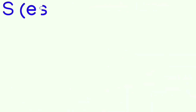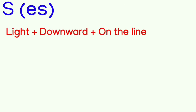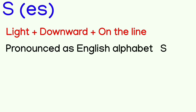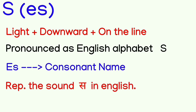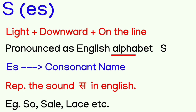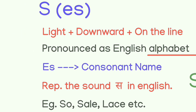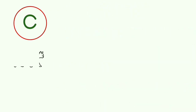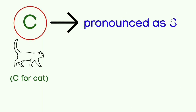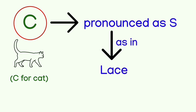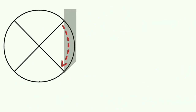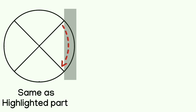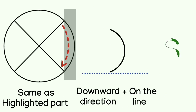The next consonant is S. This is a light consonant made in the downward direction on the line. We pronounce this consonant as the English alphabet S. S is the name of the consonant. It represents the S sound — like sail, lace. Sometimes in English, the letter C is pronounced as S, like in 'cat.' So wherever C is pronounced as S, we will use the S consonant. We highlight the corresponding part in the circle and draw the symbol in the downward direction. This is our S consonant.